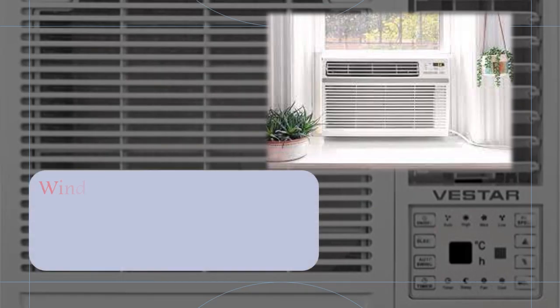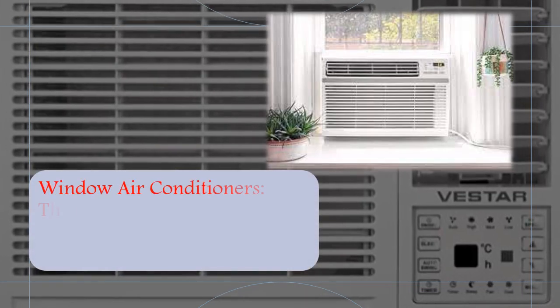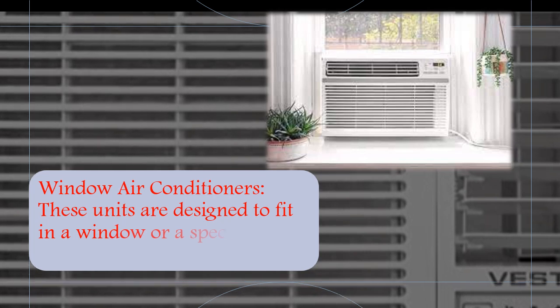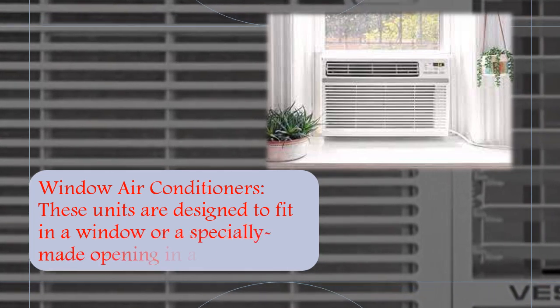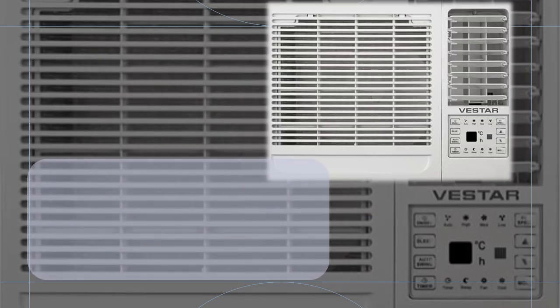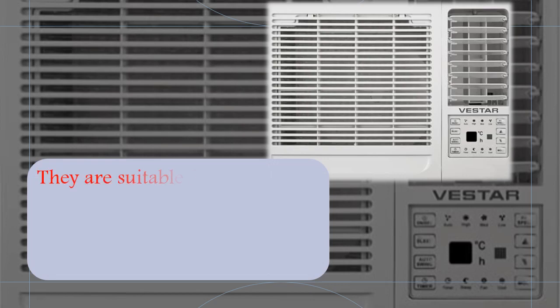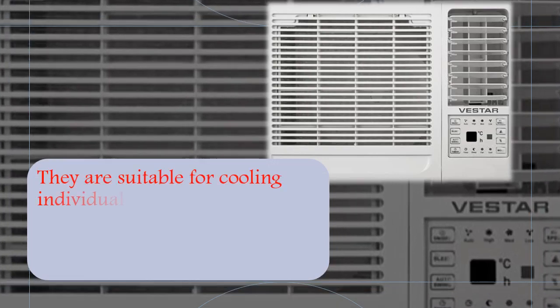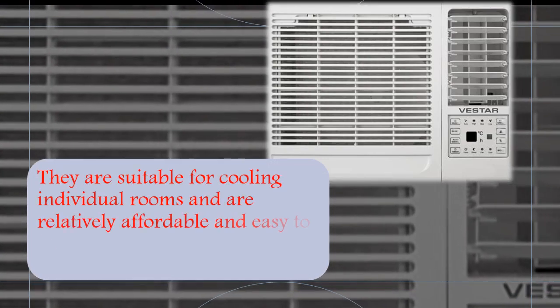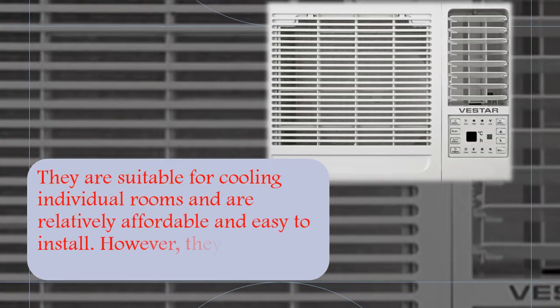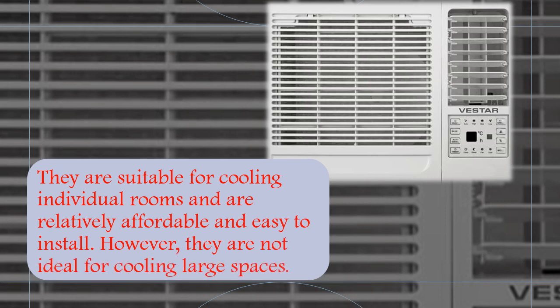Window air conditioners. These units are designed to fit in a window or a specially made opening in a wall. They are suitable for cooling individual rooms and are relatively affordable and easy to install. However, they are not ideal for cooling large spaces.